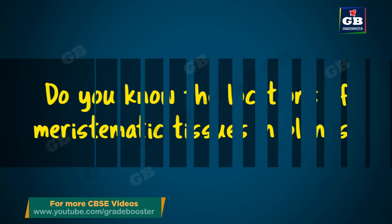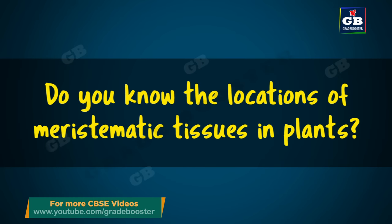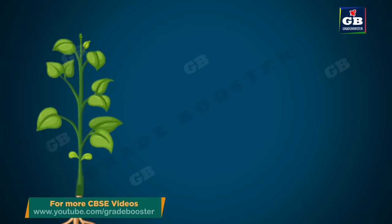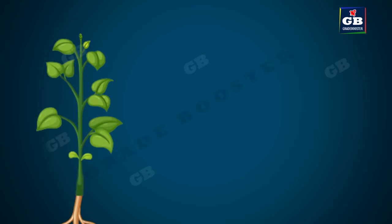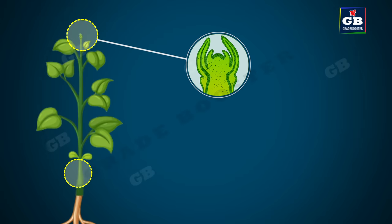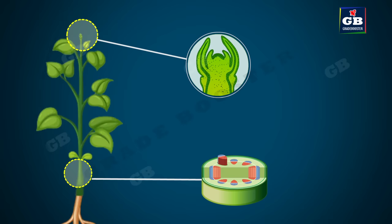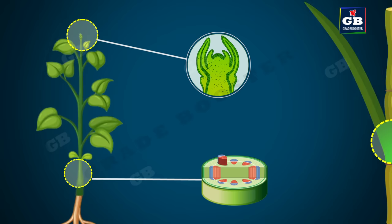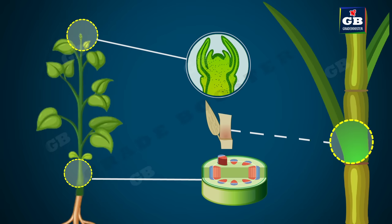Do you know the locations of meristematic tissues in plants? Meristematic tissue is classified into three types depending upon its location. They are: 1. Apical meristem, 2. Lateral meristem, and 3. Intercalary meristem.